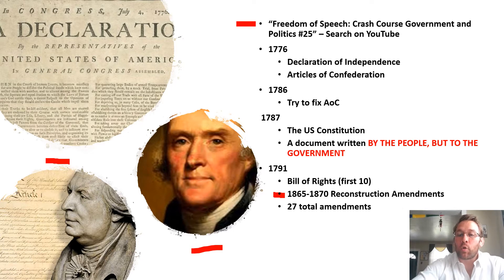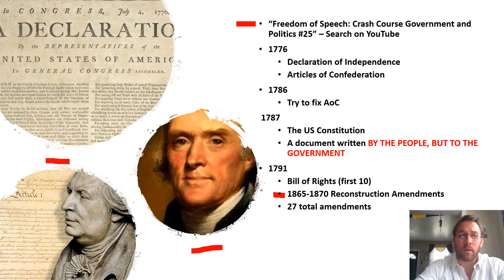In total, there are 27 amendments to the Constitution. Only 26 of them are implemented because one was overturned — that was prohibition.